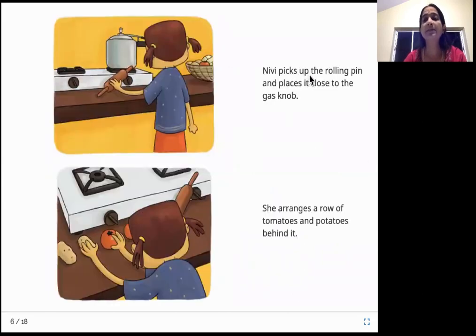Nivi picks up the rolling pin and places it close to the gas knob. She arranges a row of tomatoes and potatoes behind it. Looks like she has some fun ideas. She picks up a rolling pin. Rolling pin is something that you use to make rotis, chapatis or puris that you roll with. So she puts that near the gas knob at an incline or at a slope. After that, she places a few potatoes and tomatoes.